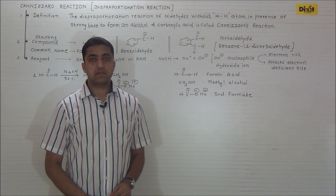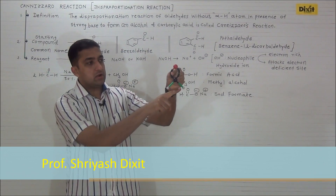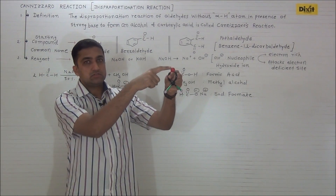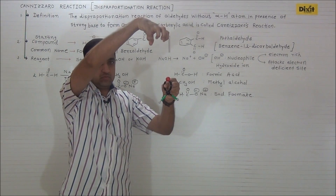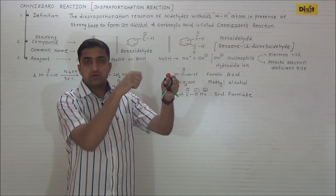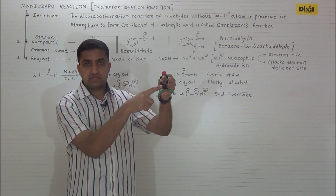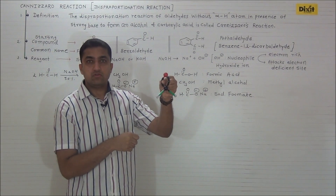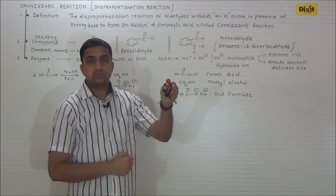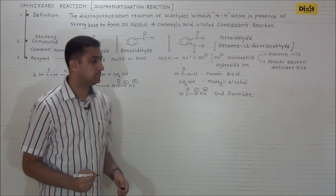Let us discuss the mechanism of Cannizzaro reaction with respect to formaldehyde. This is the ball and stick model of formaldehyde — these are the two hydrogen atoms and this is the carbonyl carbon. As oxygen is electronegative, it pulls the shared pair of electrons towards itself, leading to delta negative charge on oxygen and delta positive charge on carbon. This carbon becomes electron deficient and electrophilic, so the nucleophile attacks on this carbon atom and the pi bond breaks.